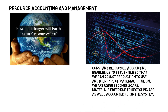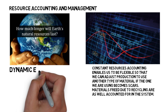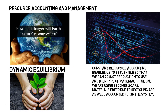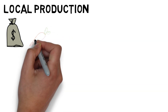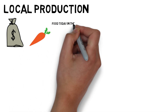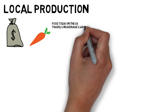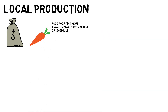Materials freed through recycling are also accounted for in the system. Every time we cut down a tree because we need wood, we need to plant a new tree to preserve the habitat. This is called dynamic equilibrium. It sounds logical, but we don't follow this logic today. In our current monetary system, the decision of where a product should be produced comes down to where it is most money-cost efficient. For instance, food in the US travels an average of 2,400 kilometers or 1,500 miles. In an RBE, production happens locally to reduce energy costs and pollution due to transportation.